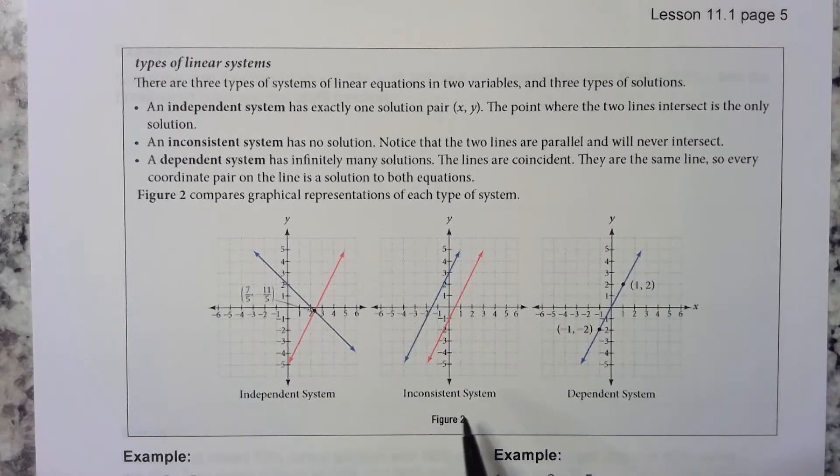You can also get an inconsistent system. That's where the lines are parallel to each other. They're never going to intersect. This will give you no solution. So this has one solution. This has no solution.